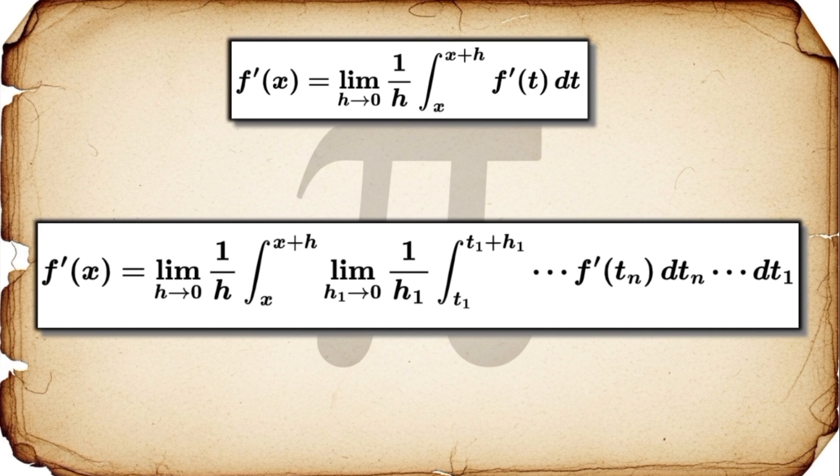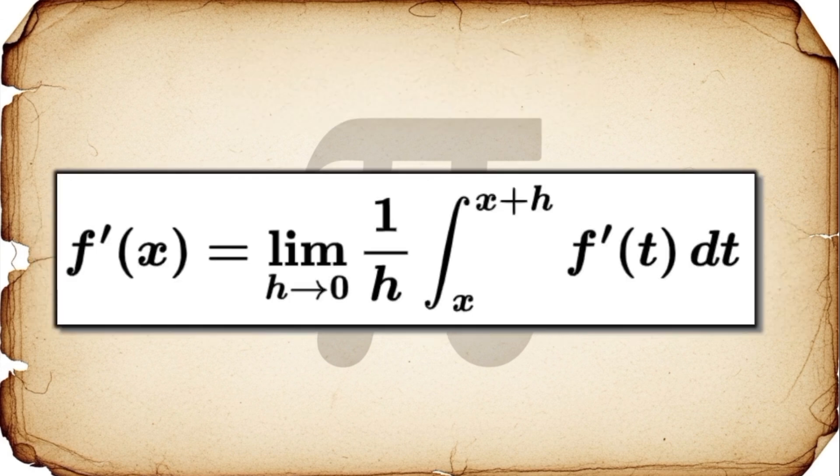So let's wrap this all up. The big idea is that thinking of the derivative as an infinitesimal average of itself isn't just a quirky thought experiment. It's a powerful, foundational principle. From this one single elegant idea, we can derive the mean value theorem, we can find a new path to the product rule, and even integration by parts. And we uncover this profound, recursive nature at the very heart of calculus.